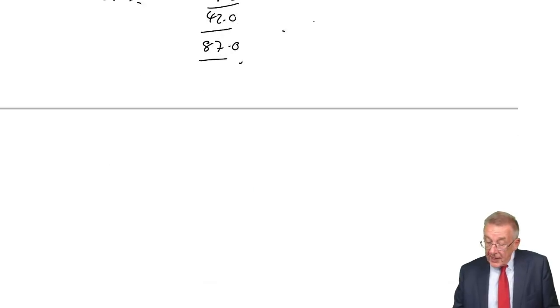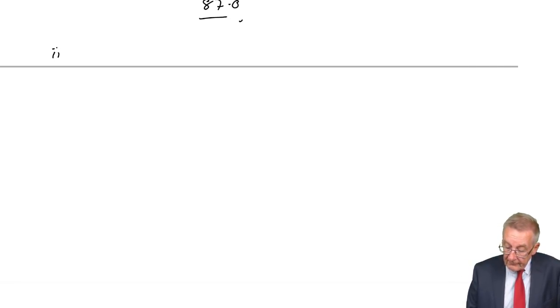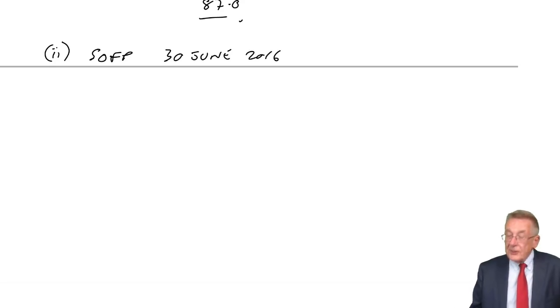That was A1. A2 though, wants the same again. Statement of financial position for the year ended June 2016. But this time on the assumption the proposed refinancing and investment takes place. And so now let's look at the details of the proposed refinancing, the section just above requirements. There was no point in reading it earlier. It wasn't relevant to A1. But for A2, let's run down.